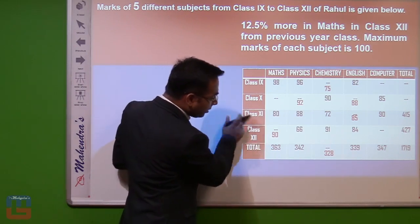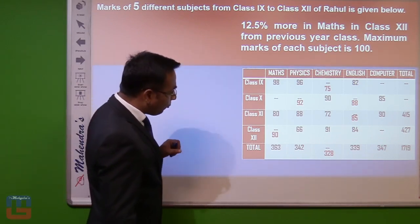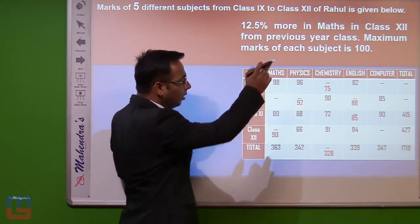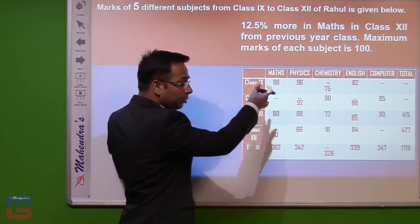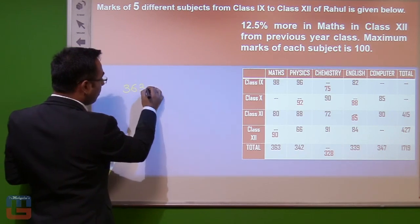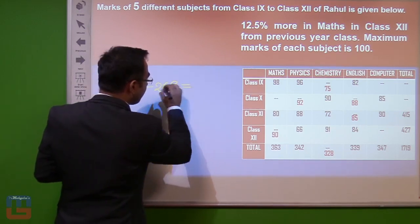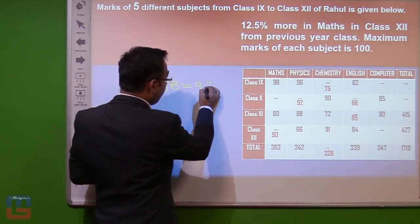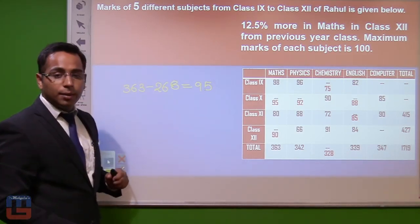Now that class 12 maths is 90, we can find class 10 maths. We sum the known maths values: 90 plus 80 is 170, plus 90 is 260, plus 8 gives 268. Then 363 minus 268 equals 95. So the maths marks in class 10 are 95.